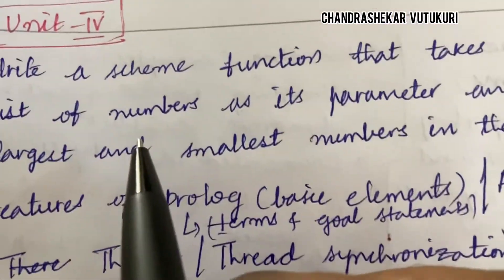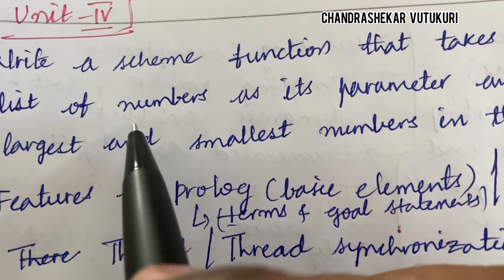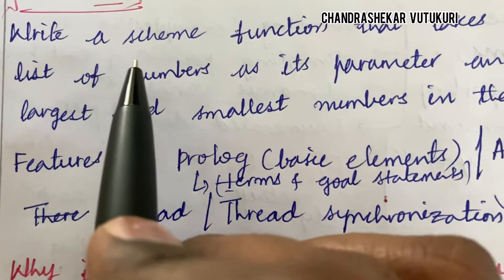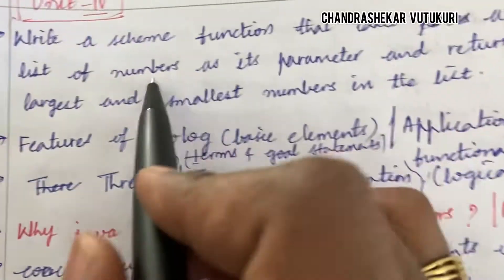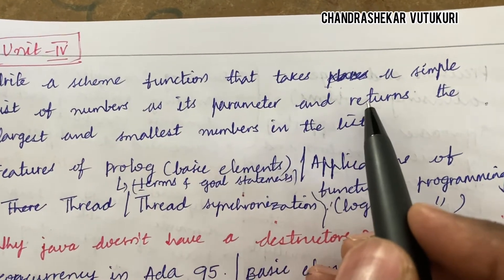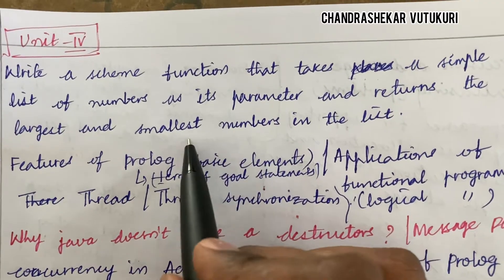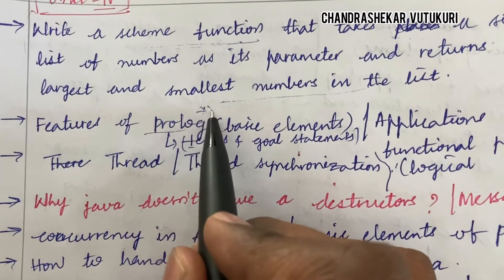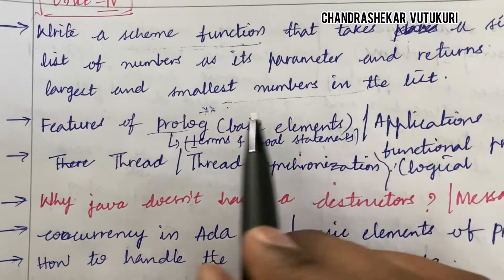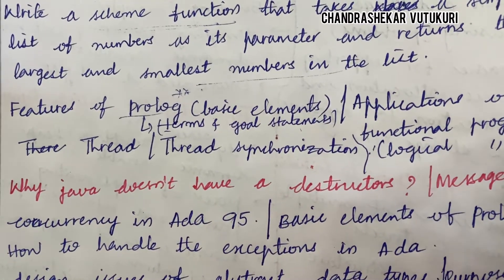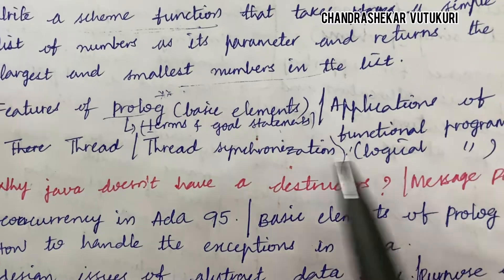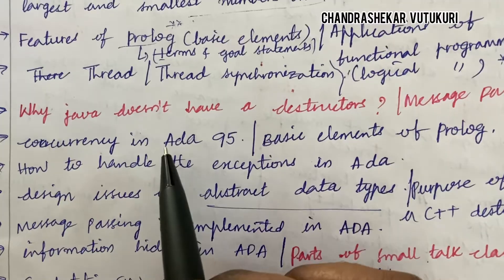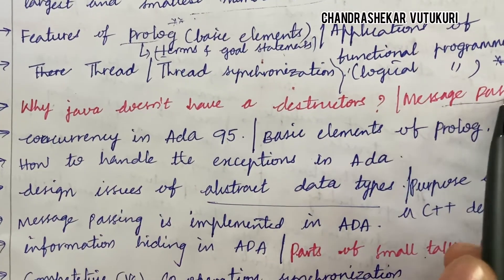Now for Unit 4 — if you are working for scoring, you are supposed to work out this unit to score 15 out of 15 marks. Write a Scheme function that takes a simple list of numbers as its parameter and returns the largest and smallest number in the list — such Scheme functions and their features you are supposed to work. Features of Prolog is a sure short question. Basic elements, terms, and goal statements, applications of functional programming, and logical programming may be a short question. Thread synchronization is a short question. Why Java does not have destructors, and message passing is also a short question.